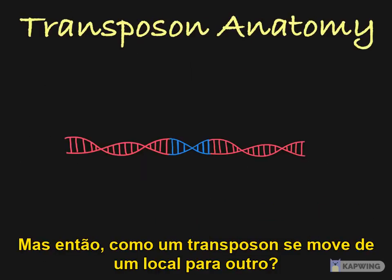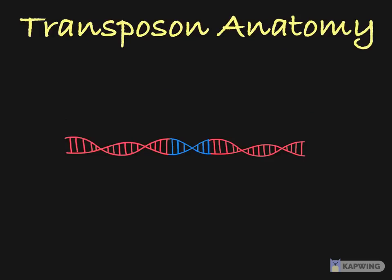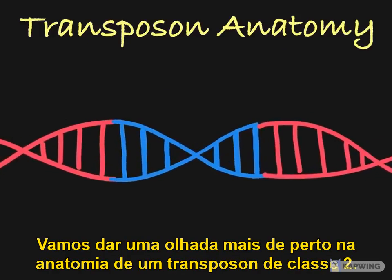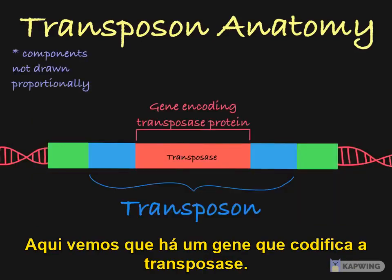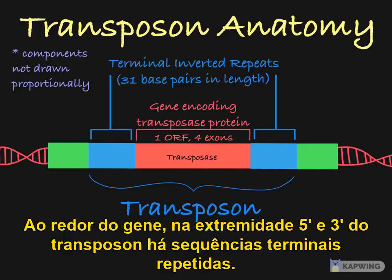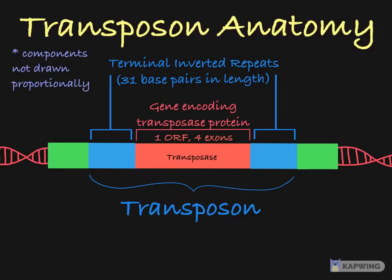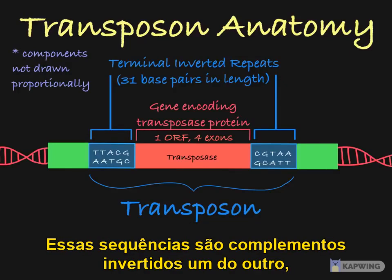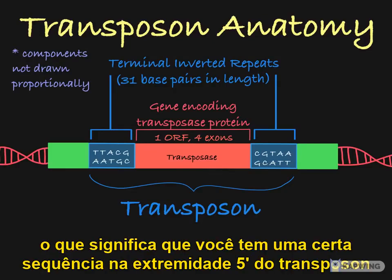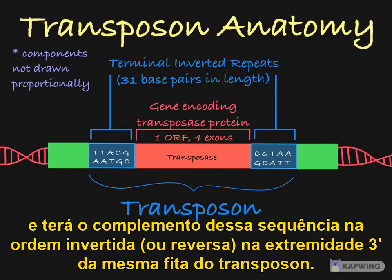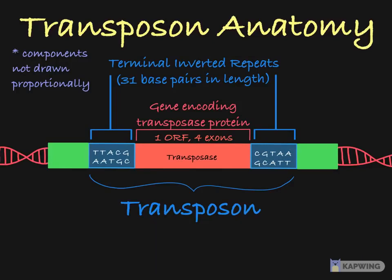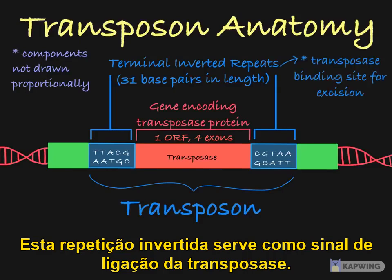So how does a transposon move from one chromosomal location to another? Let's take a closer look at the anatomy of a Class II transposable element. Here we see that it contains a gene that encodes transposase. Flanking that gene at the 3' and 5' ends of the transposon are terminal inverted repeats. These sequences are reverse complements of each other, which means that you see a certain sequence at the 3' end of the transposon, and then you will see the complement of that sequence in reverse order at the 5' end of the same strand of the transposon.